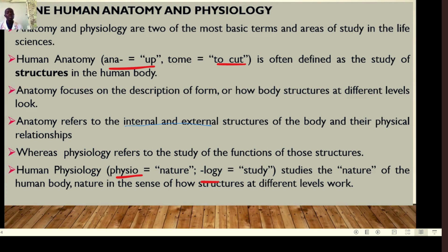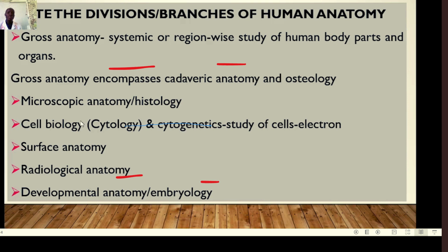Regarding physiology, it also comes from two terms: 'physio,' which means nature, and 'logos,' which means study. So physiology studies the nature of the human body — how these structures work at different levels. We can say that physiology refers to the study of function of those structures, whereas anatomy looks at the description of form and how these structures look; physiology looks at how these structures function.